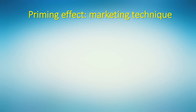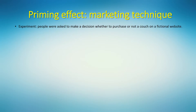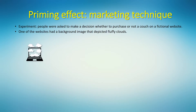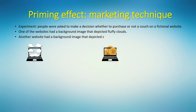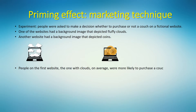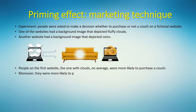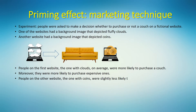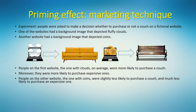Here is one more example of the priming effect in action. There was a famous experiment where people were asked to decide whether to purchase a couch online on a fictional website. One website had a background image depicting fluffy clouds; another had a background image depicting coins. The results showed that people on the first website — the one with clouds — were on average more likely to purchase a couch, and moreover, more likely to purchase expensive ones. People on the other website — the one with coins — were slightly less likely to purchase a couch, and much less likely to purchase an expensive one.